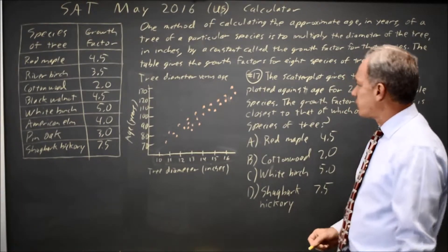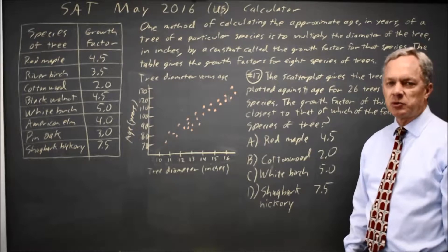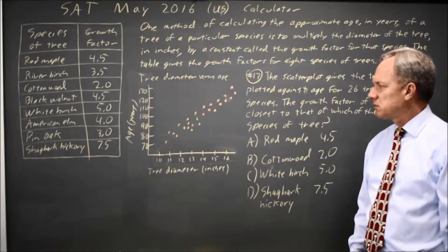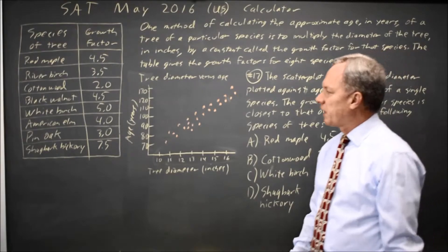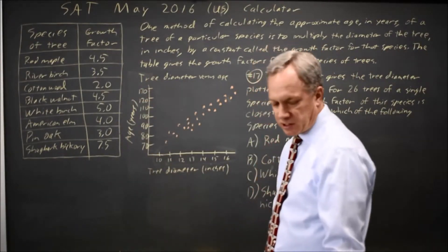And since the growth factor will be the slope of this graph, because the growth factor is how much the age goes up for each inch of diameter, and the slope is the change in y age over the change in x diameter in inches.